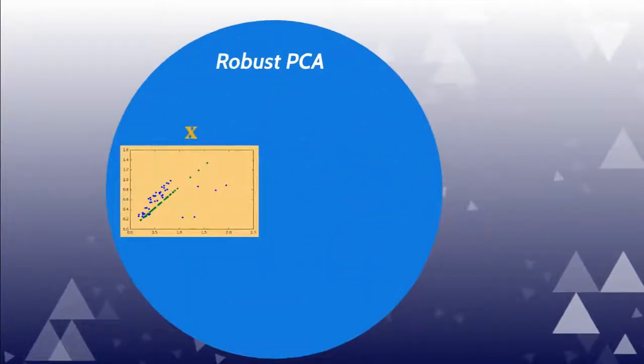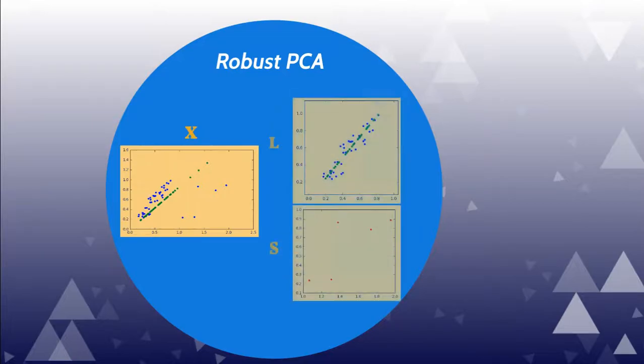Second, robust PCA extends PCA that reduces the sensitivity to anomalies. Robust PCA splits a data matrix X into a low-rank matrix L and a sparse matrix S. After splitting, robust PCA could discover linear low-dimensional representation in L and filter out anomalies in S.